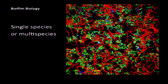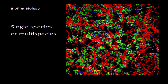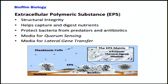So, biofilm biology. Biofilms can be single-species communities or multi-species — I'm going to focus on multi-species. They can be a handful of different species, dozens, or allegedly in dental plaque, hundreds. One interesting thing about biofilms is they have EPS — extracellular polymeric substance — which provides structural integrity, helps capture and digest nutrients, protects bacteria from predators by creating barriers, wards off antibiotics by binding molecules that degrade them, and serves as a medium for quorum sensing and lateral gene transfer.